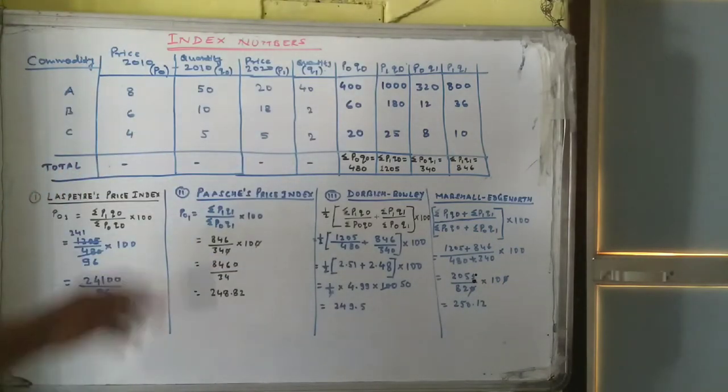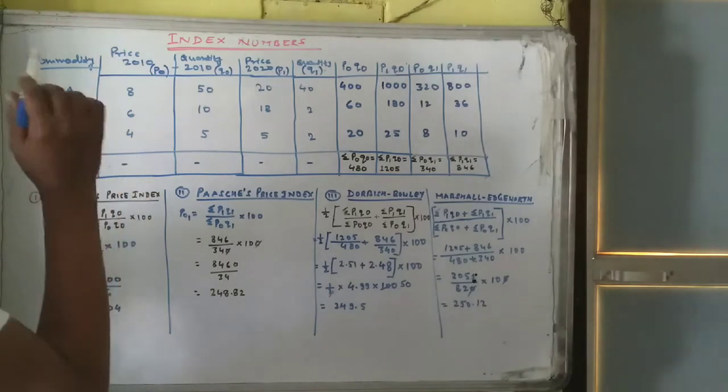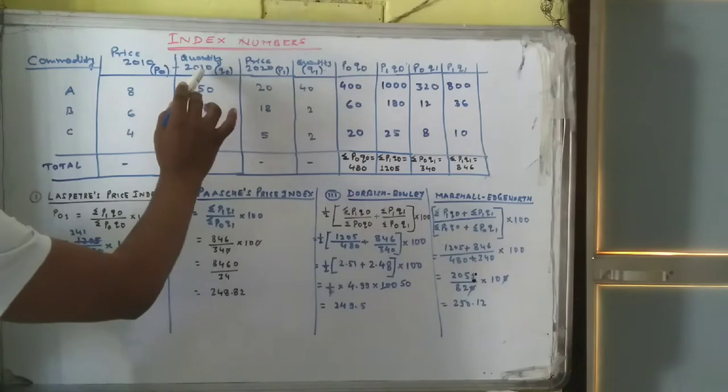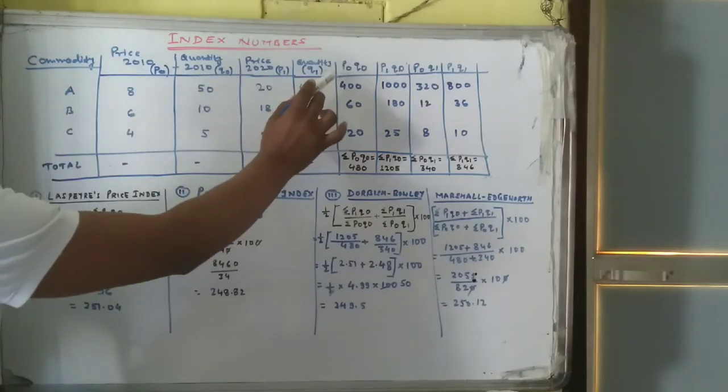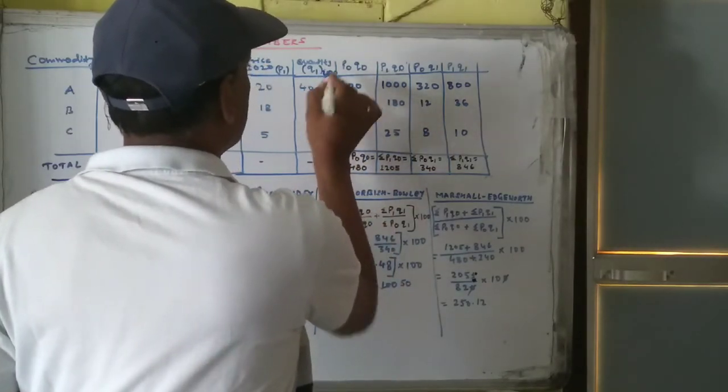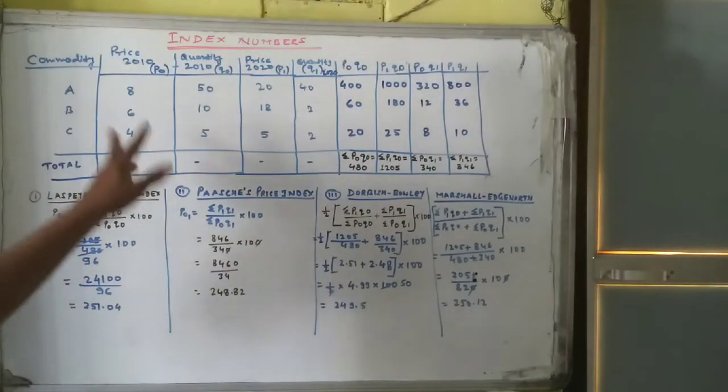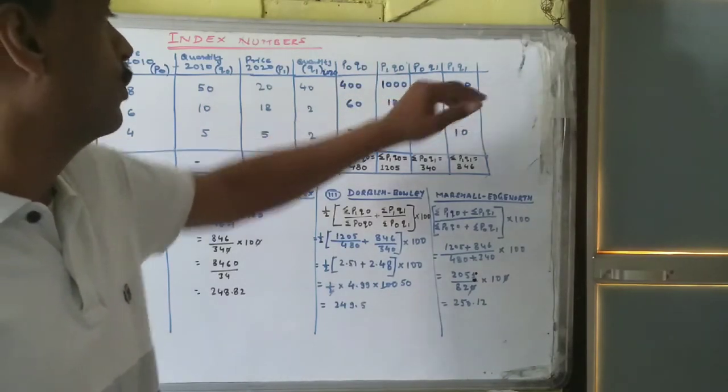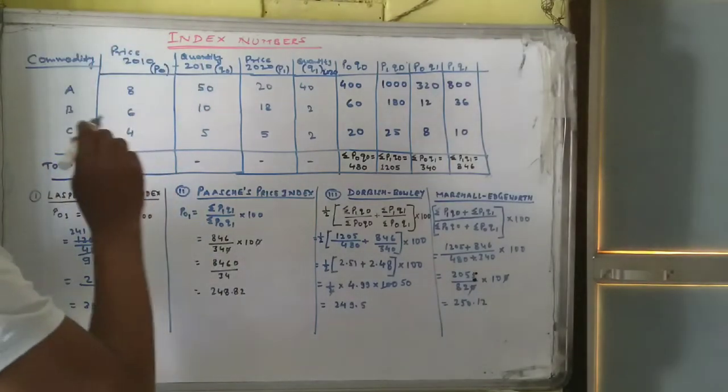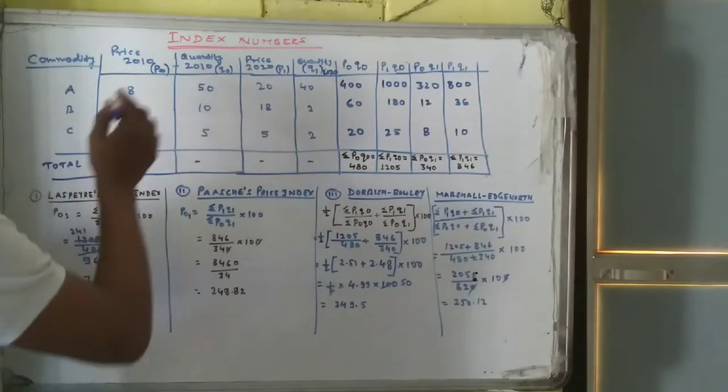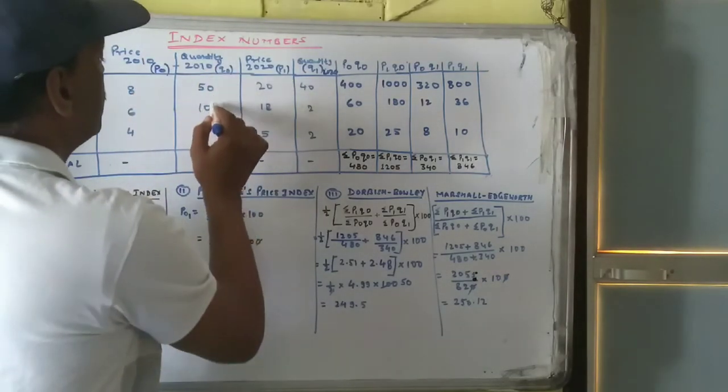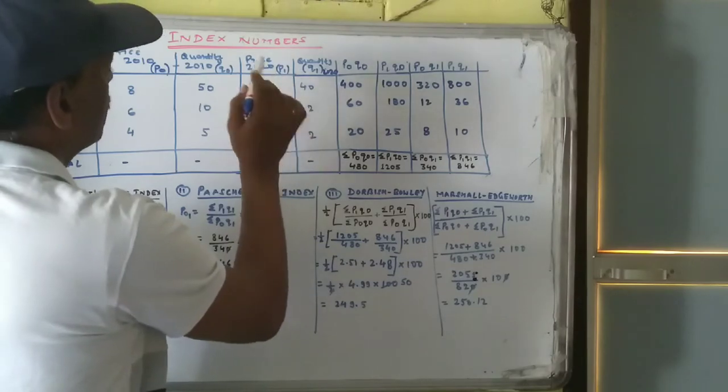The question is not written here on the board, the solution part is written here. In the question, commodity, price of base year, quantity of base year, price of current year, and quantity of current year is given. And from here four columns should be prepared by us.